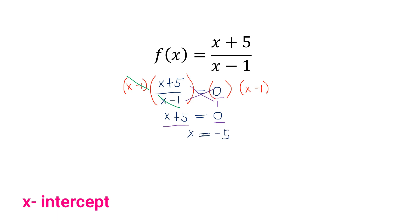Therefore, the x-intercept is negative 5. That means the graph will intersect the x-axis at negative 5.